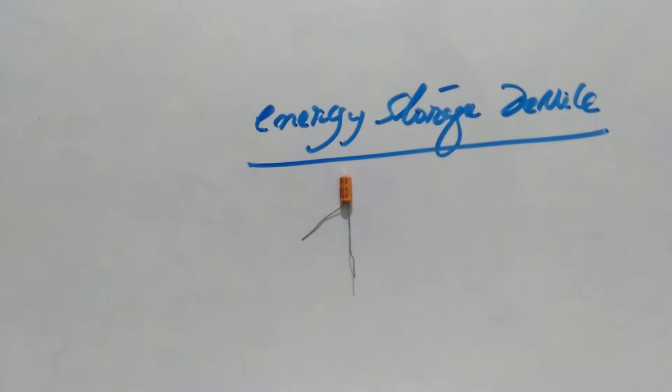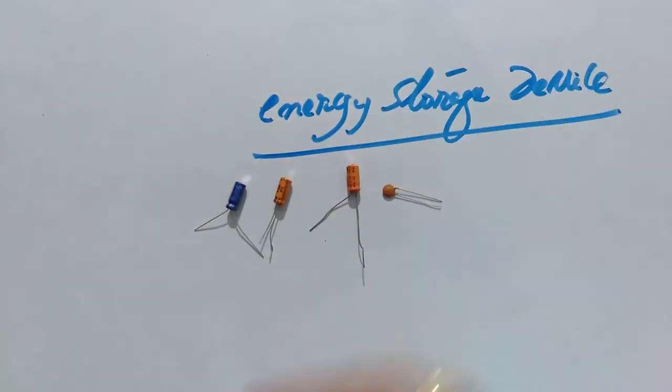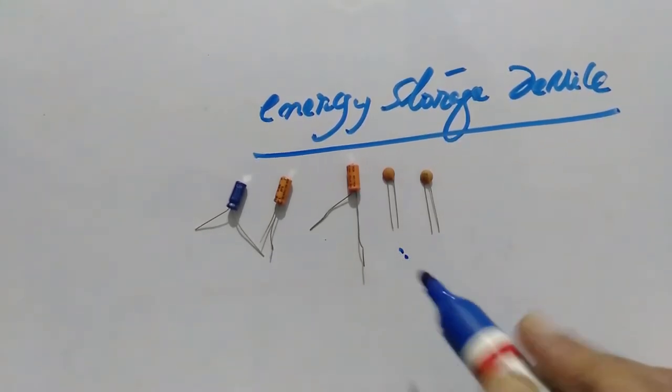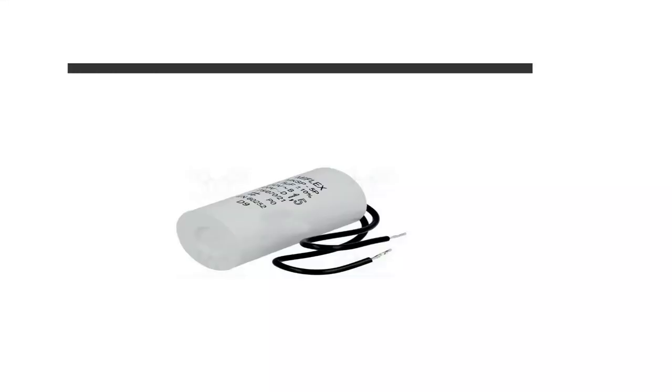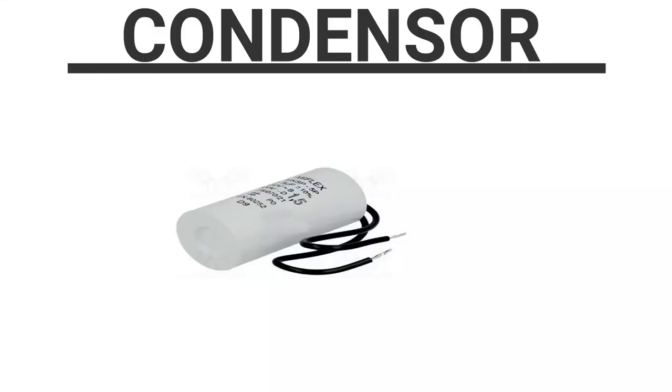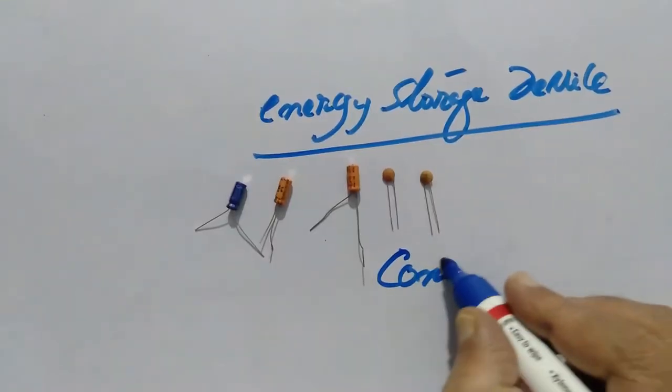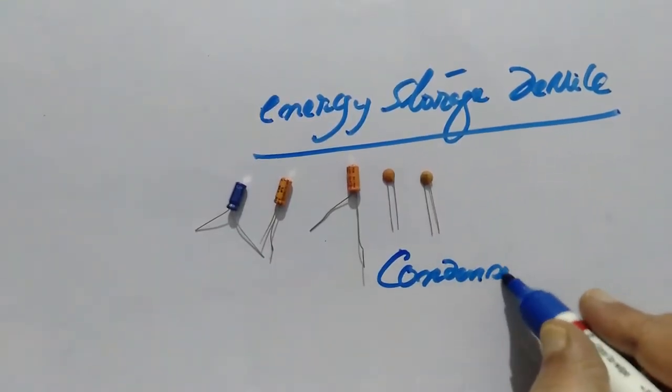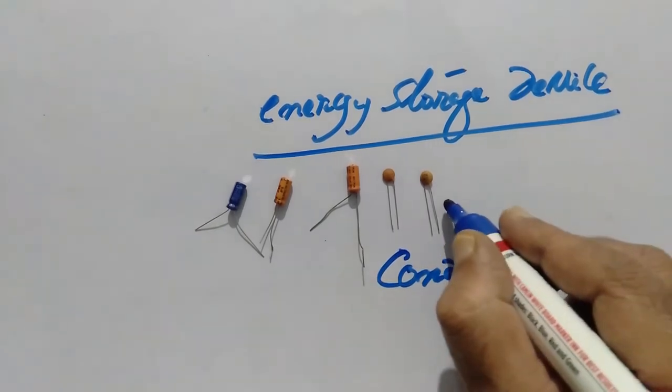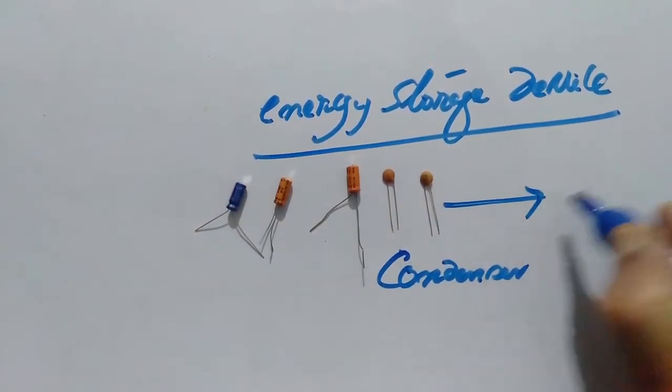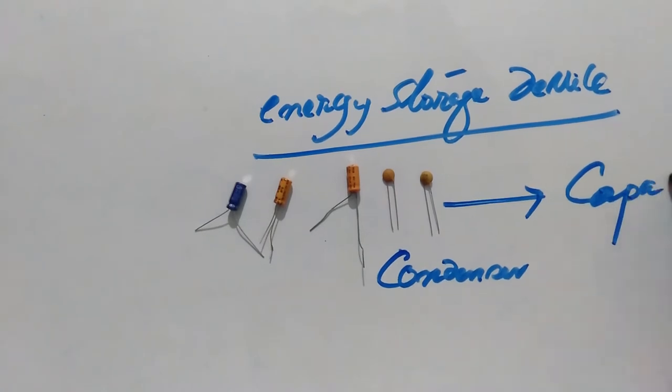So this is the other device. You would have seen a device which is having the shape of a cylinder in fans, and that device earlier was known as condenser. Now it is named as capacitor.